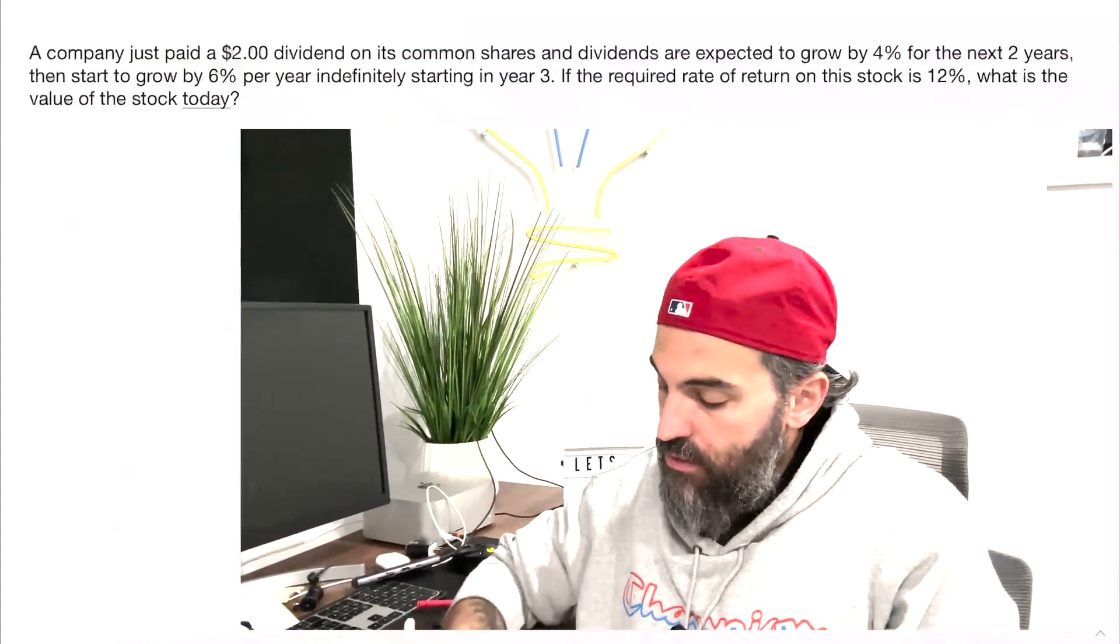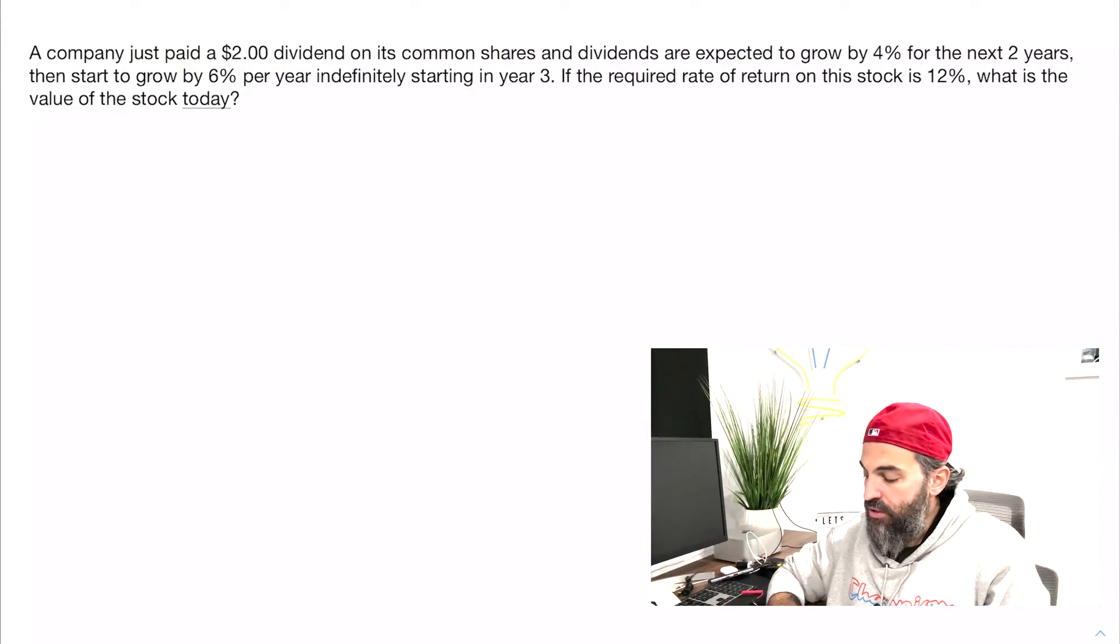Hey everyone, in this video we're going to solve a non-constant growth stock question, meaning we're going to calculate the price of a stock where the growth rate is not constant. The company just paid a $2.00 dividend on its common shares. Dividends are expected to grow by 4% for the next two years, then start to grow by 6% indefinitely starting in year three. We've also given the required rate of return of 12%.